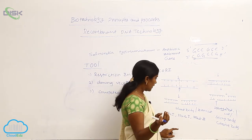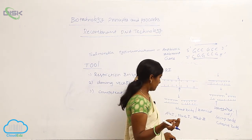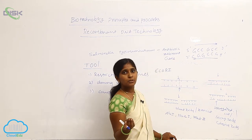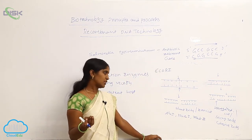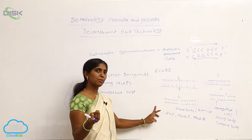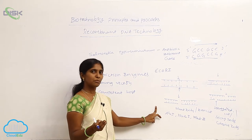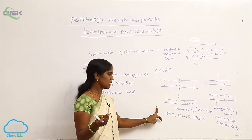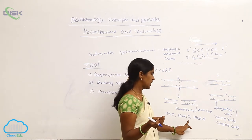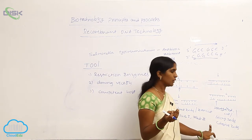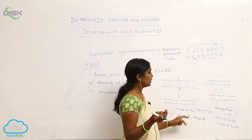An adapter is required for joining blunt-ended DNA during rDNA technology. Blunt ends are produced by even cuts. Different restriction enzymes that produce blunt ends, isolated from different microorganisms, include Alu-I, HAE-I, and HindIII.